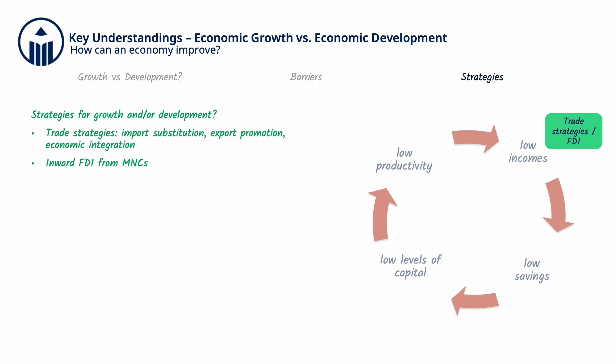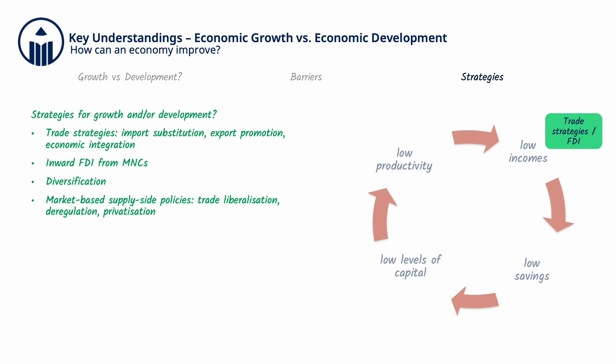Countries that face the barrier of over-specialization and over-dependence on primary sector production can pursue diversification policies to build other industries that can propel the country's economic growth. Governments also use market-based supply-side policies like trade liberalization, deregulation, and privatization to increase investor confidence and so lead to more private sector investment, though these policies can sometimes worsen income inequality. Interventionist policies are better at addressing income inequality, but they are costly. Interventionist policies like redistribution policies, education programs, health programs, and the provision of infrastructure are all both pro-growth and pro-development, but may be restrained by lack of funds or lack of political willpower to pursue these policies.